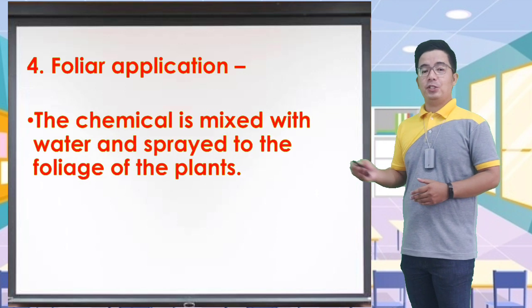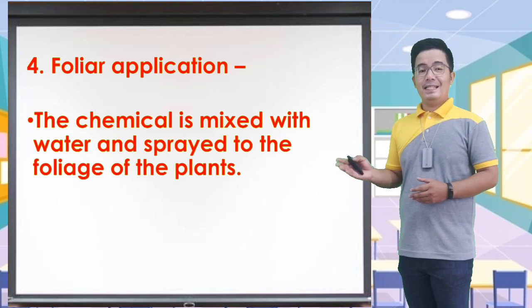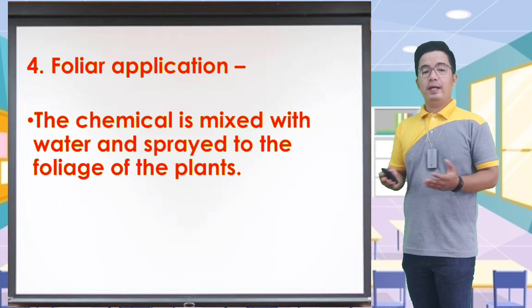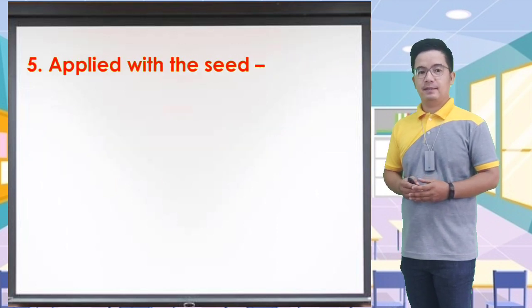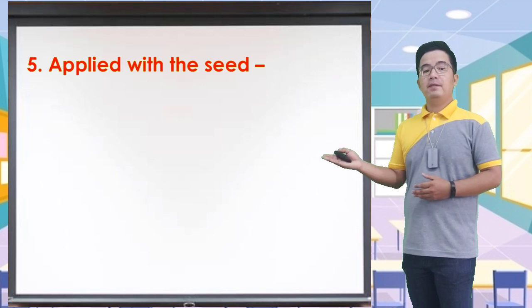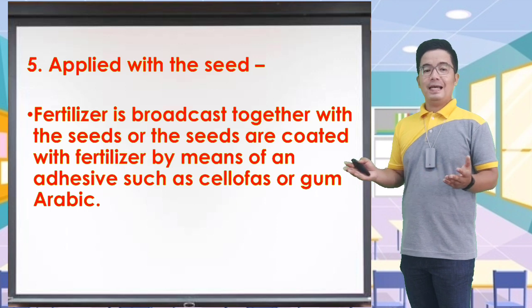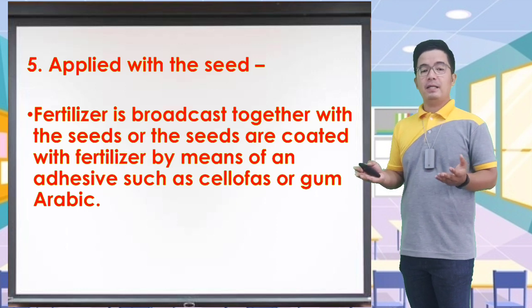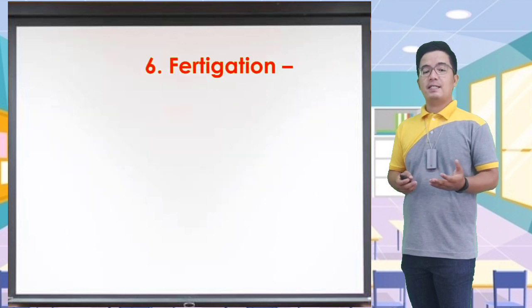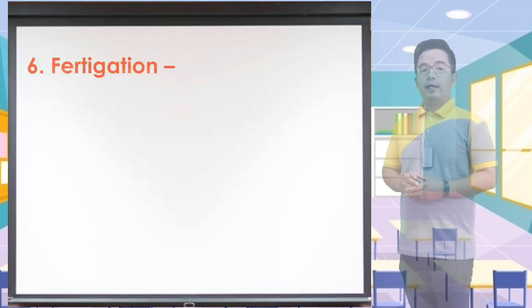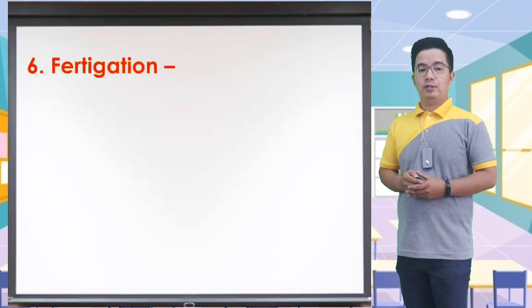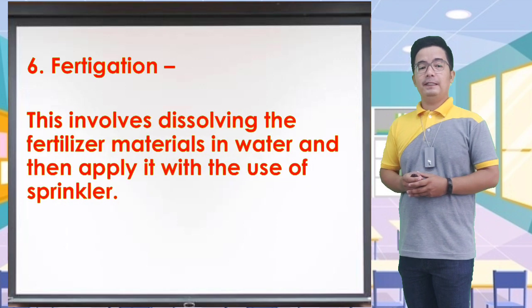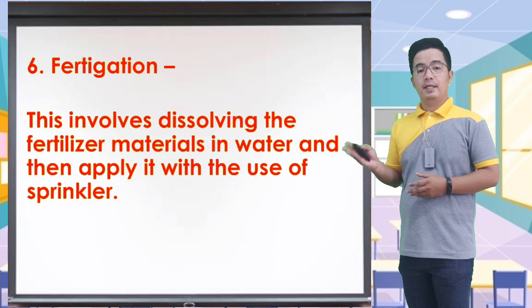Another method is foliar application. The chemical is mixed in water and sprayed on the foliage of the plants. Another method is application with the seed — fertilizer is broadcast together with the seeds, or the seeds are coated with the fertilizer by means of an adhesive such as cellulose or gum arabic. And the sixth method is fertigation — this involves dissolving the fertilizer materials in water and then applying it with the use of a sprinkler.